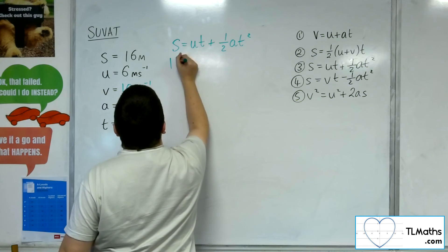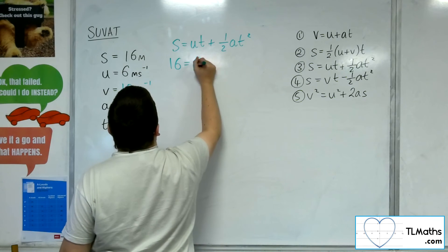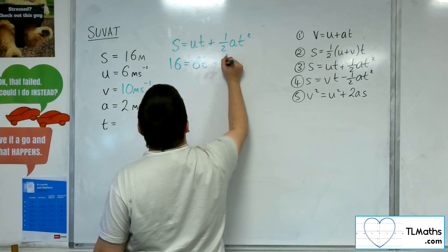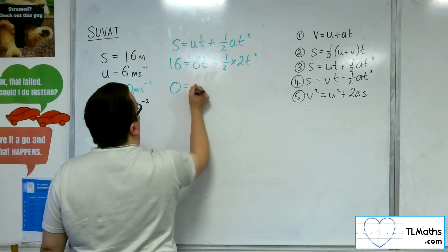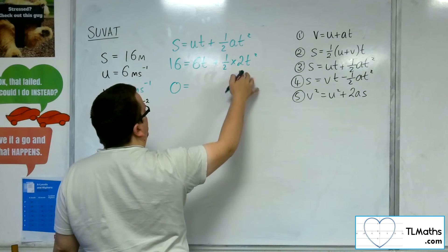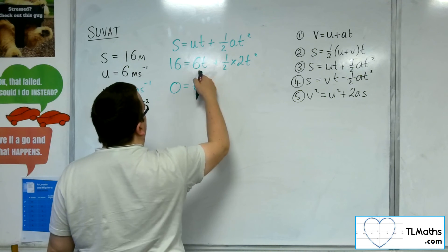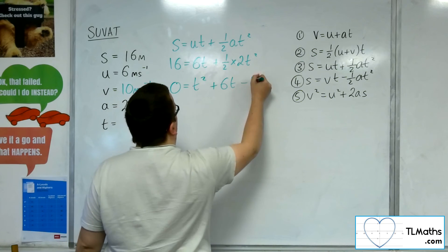So if I substitute in, I've got 16 is equal to 6t plus 1 half times 2t squared. So let's move everything onto one side of the equation. I've got 1 half times 2t squared, so just t squared, plus the 6t, take away the 16.